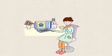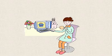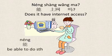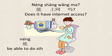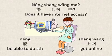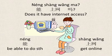The last question I would like to ask is: Does it have internet access? Yeah, it's important. You can ask: 能上网吗? 能 means 'be able to do something'. 上网 means 'to get online'. 能上网吗? — Does it have internet access? Answer: 可以. 而且是宽带上网.